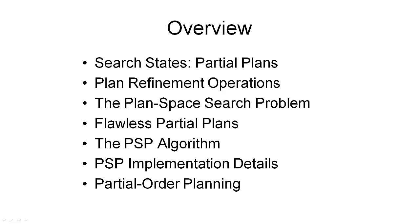We have now seen what the search states look like in our new search space, and we have seen what the state transitions in this new search space look like. There were four such transitions according to the four components of a partial plan: we could add an action, we could add an ordering constraint, we could add variable bindings, and we could add causal links to the partial plan. This means we're very close to the definition of plan space search as a search problem, and we will look at the missing bits and pieces next.